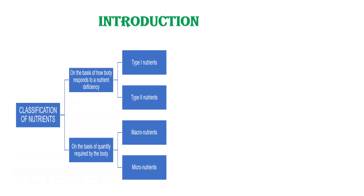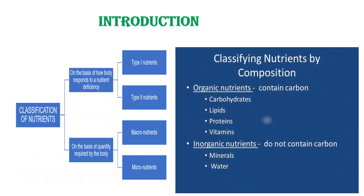Classification of nutrients can be based on how the body responds to a nutrient deficiency, as type 1 and type 2; on the quantity required by the body, as macronutrients and micronutrients; and also based on composition, as organic and inorganic.